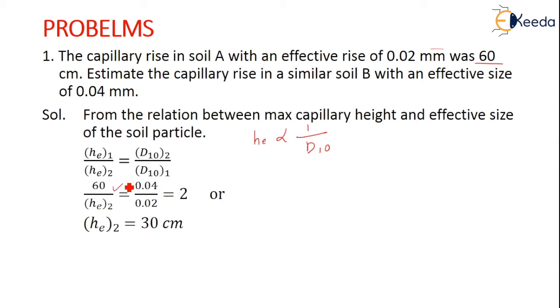What is (hc)₁? Given as 60 cm for soil A. We don't know the value of (hc)₂. What is (D10)₂? The effective size of soil B is given as 0.04 mm, and soil A is given as 0.02 mm. Just substitute. After rearranging, we have (hc)₂ for soil B is 30 centimeters. So very simple.